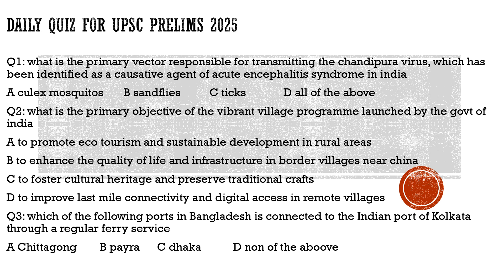Option B — to enhance the quality of life and infrastructure in border villages near China — is 100% true. Option C, to foster cultural heritage and preserve traditional crafts, is incorrect. Option D, to improve last-mile connectivity and digital access in remote villages, is also incorrect because it says all remote villages, not border villages near China. So the correct answer for question two is option B.